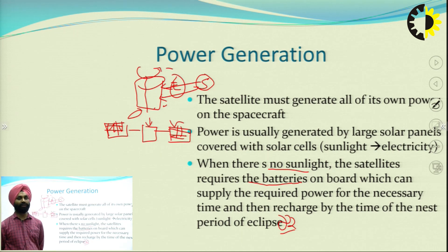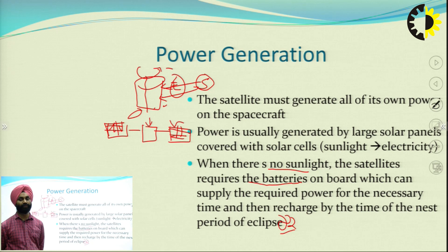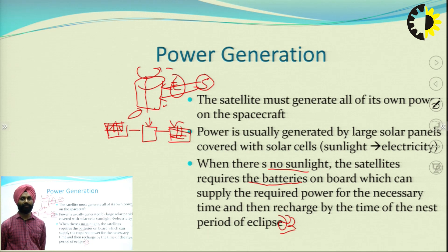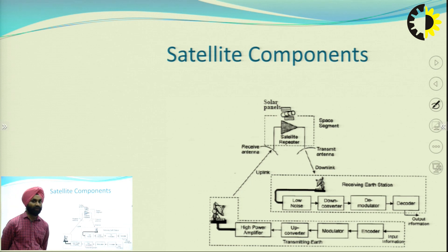A power-saving mode is turned on when the satellite is in eclipse so that the satellite can resume full operation once sunlight is restored. The batteries need to be sufficient to make the satellite work during the eclipse period. Some satellite functions are kept on hold and only essential operations are maintained on battery power alone.